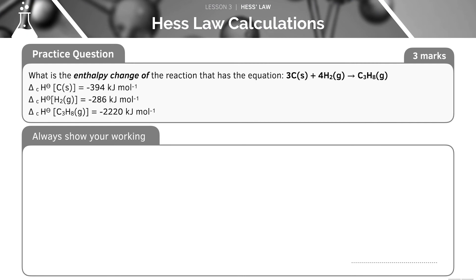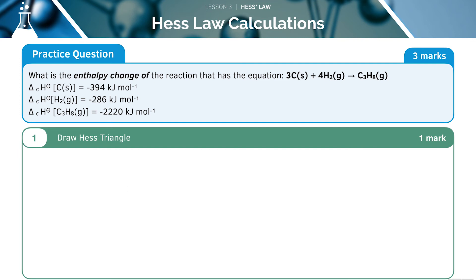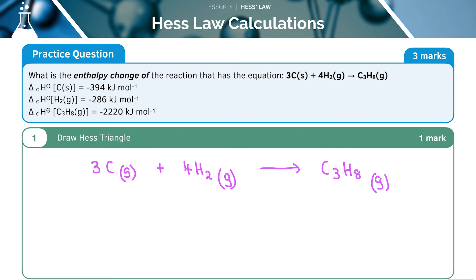Let's try this practice question together. Pause the video now to work it out by yourself. First of all, we need to draw Hess's triangle. In this instance, we're going from 3C solid plus 4H₂ gas into C₃H₈ gas. We know that down here we have to write CO₂ and H₂O, so we've got 4H₂O and 3CO₂. We can get to this via route 1 or route 2.